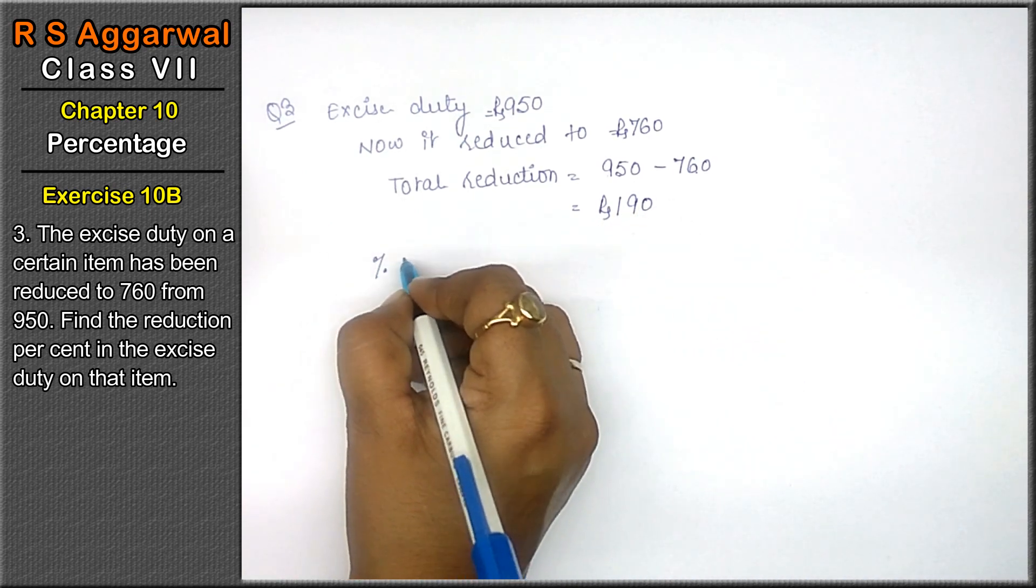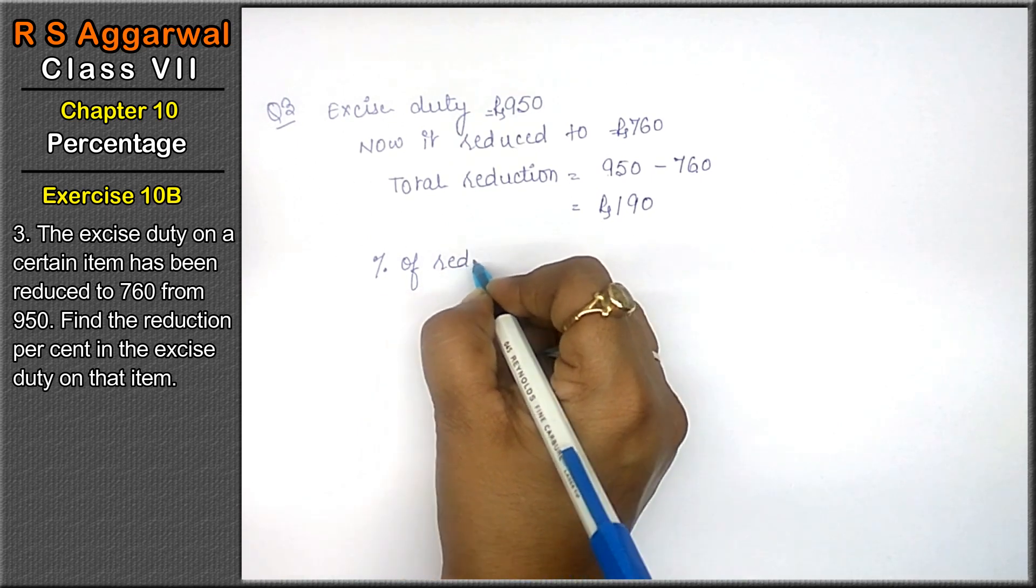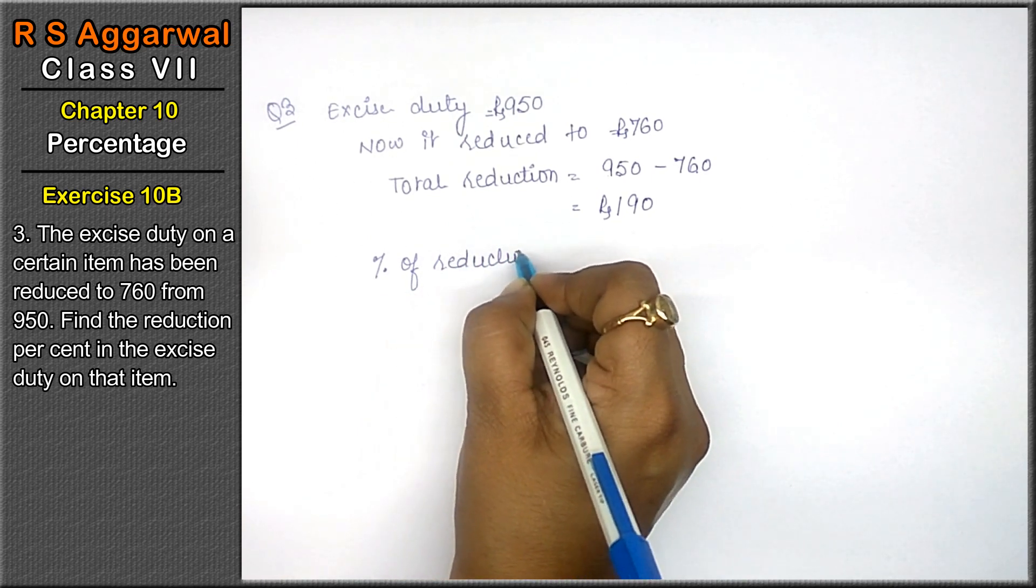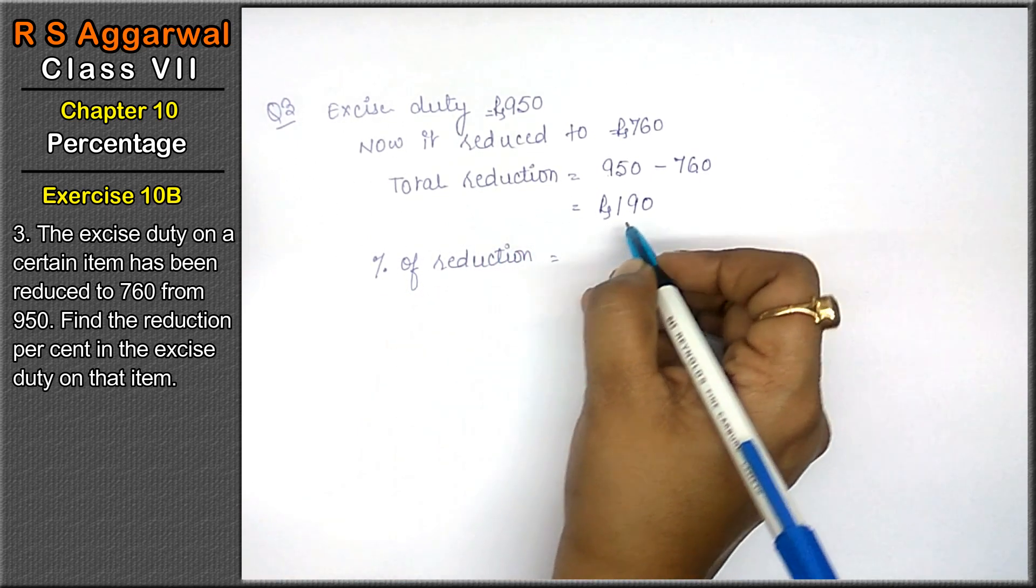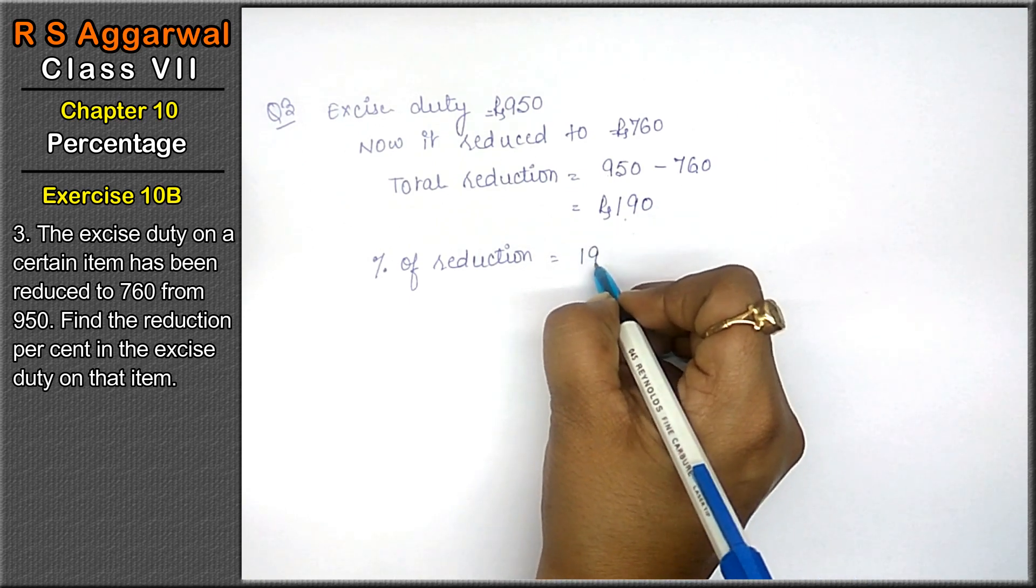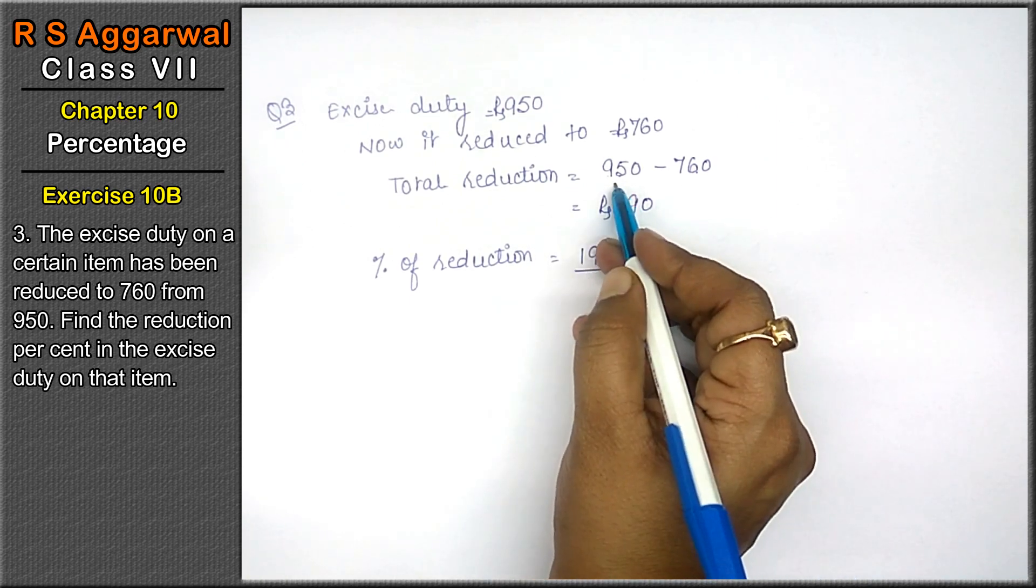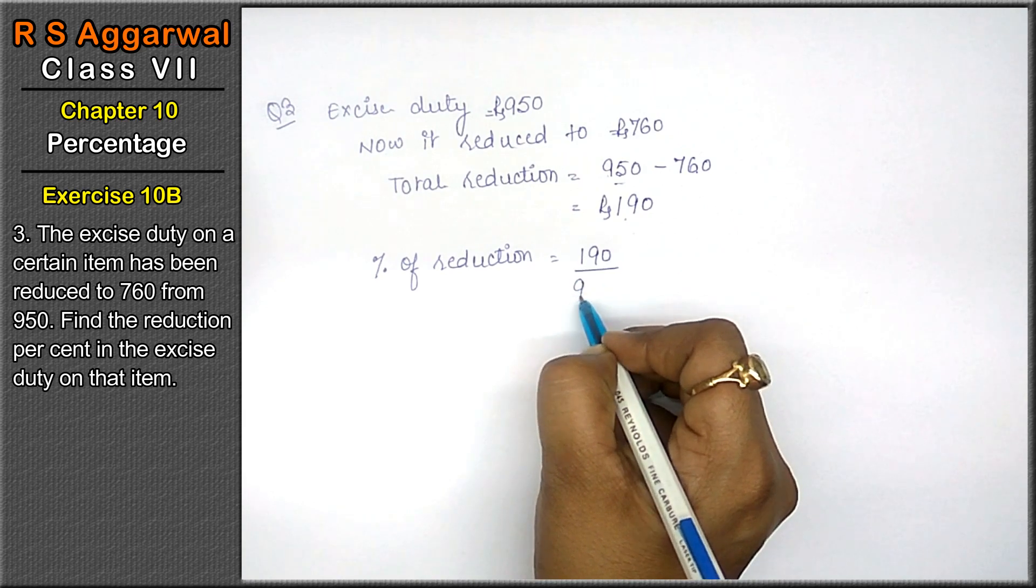So percentage of reduction: how much was reduced? We have to take a percentage. How will we calculate? How much reduced? 190 upon total. How much was it? That means 950.